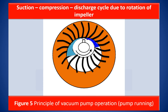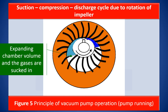The volume of the small chamber gradually increases from small to large as the impeller rotates and the pressure decreases. When the impeller reaches the suction port, the pressure has reduced to just below the pressure in the suction vessel and the gas starts flowing into the cavities or cells through the suction port. When the suction is completed, the cell is isolated from the suction port.